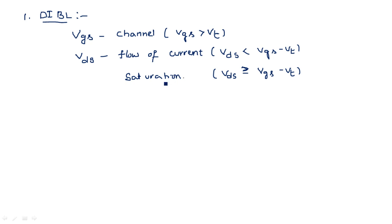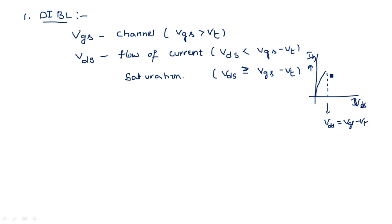When VDS equals VGS minus VT, saturation region occurs — no current flows and the channel starts breakdown. That is why in the IDS characteristics, IDS increases with respect to VDS initially, and later at the point where VDS equals VGS minus VT, the current becomes saturated. In this region the transistor enters into saturation. If VDS is greater than VGS minus VT, the saturation region starts.